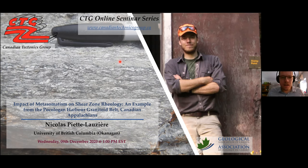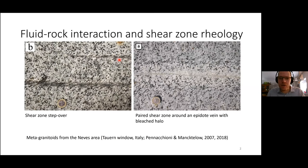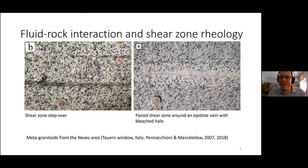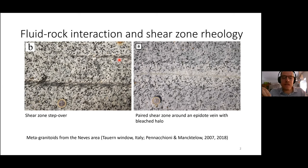I think by now it's fairly well accepted that shear zones and fault zones are excellent conduits for fluid. We could be talking about surface fluid such as sea water percolating down a fault zone and into shear zones, and we could also be talking about metamorphic fluids or metasomatic fluids that would climb up into shear zones because of differential pressure.